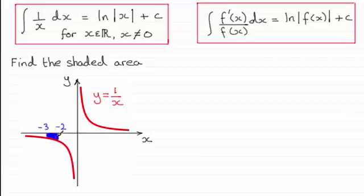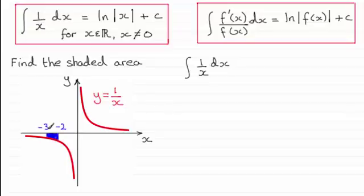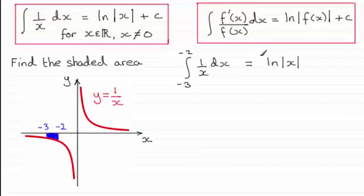The first thing we want to do is integrate the function y equals 1 over x. So we start with the integral of 1 over x with respect to x, between the limits x equals minus 3 to x equals minus 2. Picking up on this result, it equals the natural log of the modulus of x, evaluated between those limits, minus 3 to minus 2.